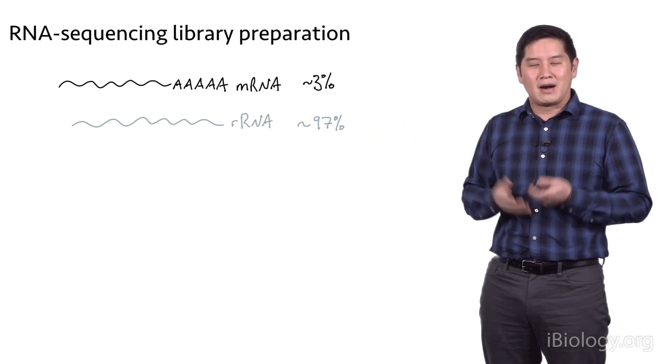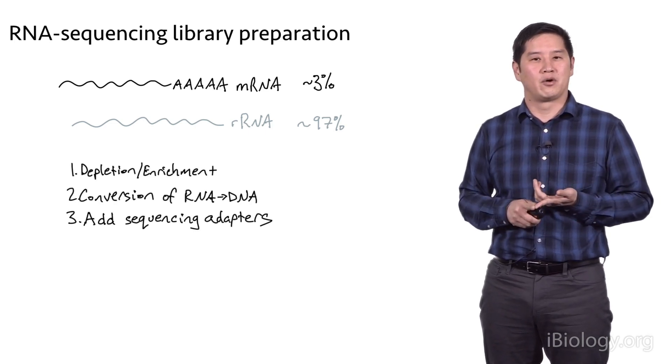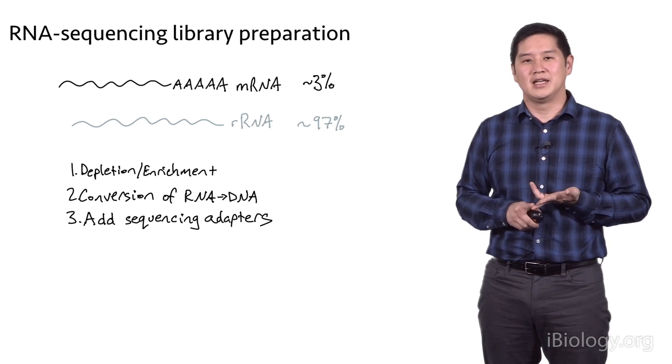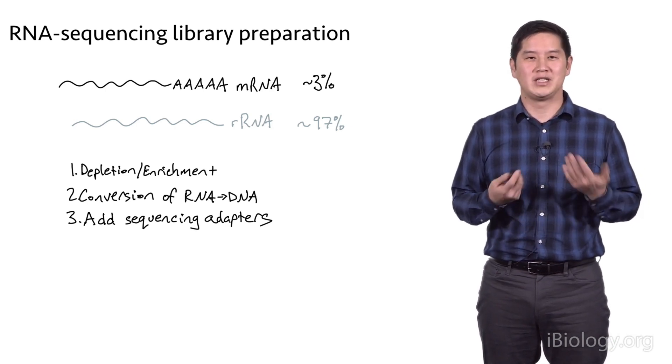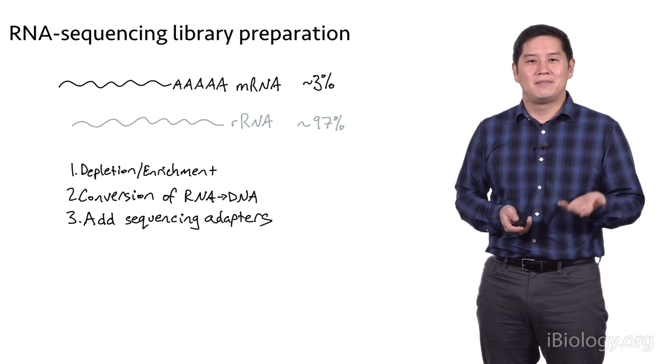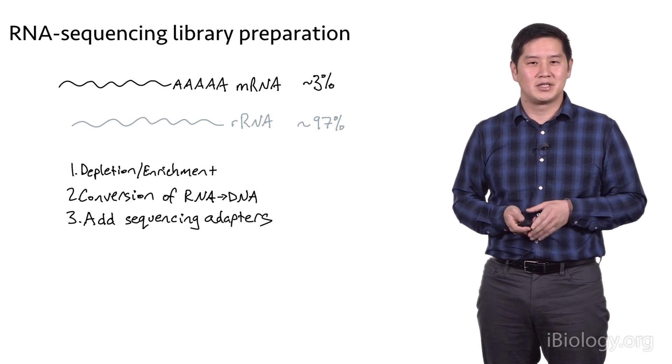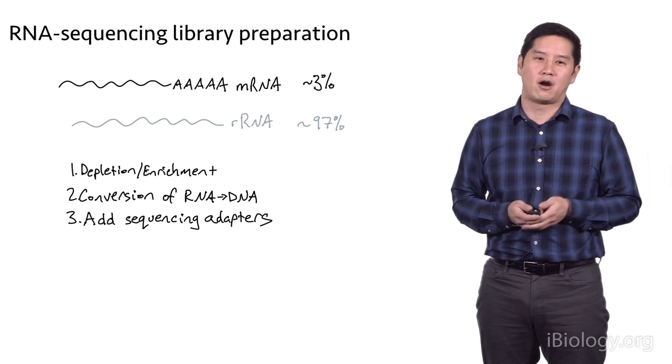To prepare RNA sequencing libraries, there are a couple of extra steps. One is a depletion or enrichment step. The second is conversion of RNA to DNA because the Illumina sequencers only work for DNA—you can't sequence RNA directly on these platforms. And then the last step is to add sequencing adapters to complete the DNA library preparation of that converted RNA.